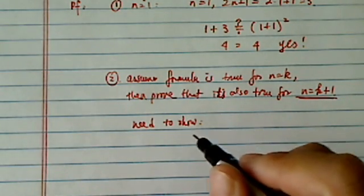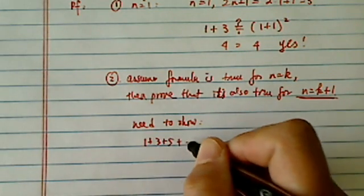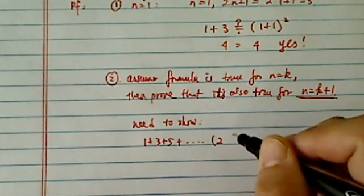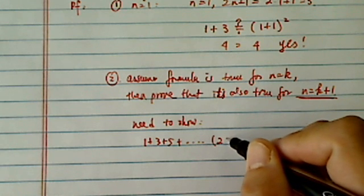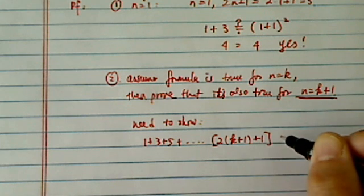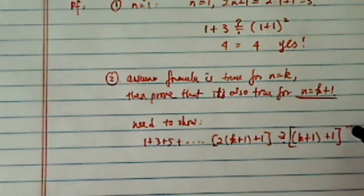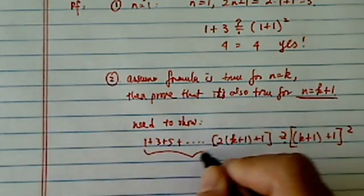Basically, what we need to show is this. Okay, so 1 plus 3 plus 5 plus so on and so forth, 2 times k plus 1 plus 1 is equal to k plus 1 plus 1 squared. Okay, so let's get started.